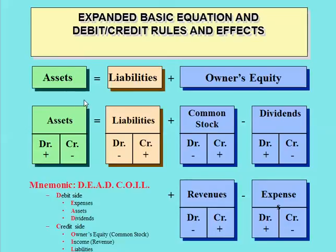Here's where the more confusing part comes in. We've got the basic accounting equation: assets equal liabilities plus equity. If we draw a line like our T-account through the asset section, you can see that assets increase with a debit. So if I want to increase my cash account, I debit cash for $100. If I want to decrease my cash account, I credit it.